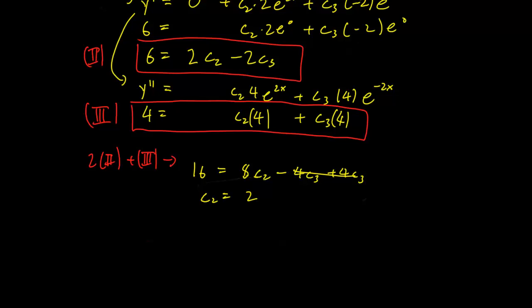And this just tells us that c₂ equals 2. So now we can use the third equation. And this tells us that 6 = 2(2) - 2c₃. And this is only possible when c₃ equals minus 1.